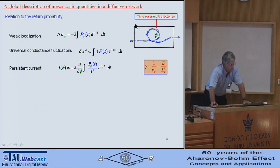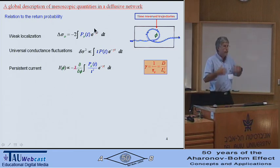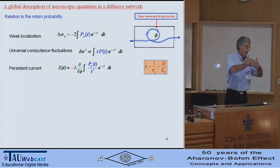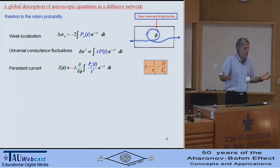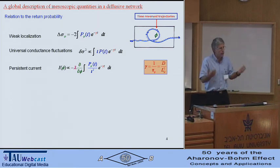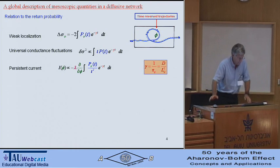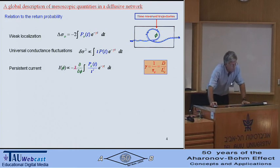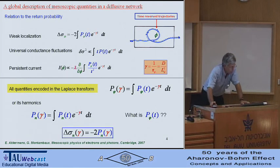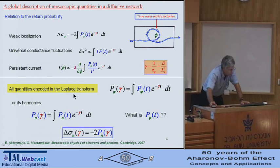This is a phase-sensitive quantity, so it has to be cut at some time scale — the phase coherence time — which is limited by interaction with external degrees of freedom: phonons, magnetic impurities, or other electrons. Here, it is just a parameter. What you have to remember is that all quantities are encoded in the time integral of the return probability — the Laplace transform of the return probability — where gamma, the Laplace parameter, is the inverse of the phase coherence time.